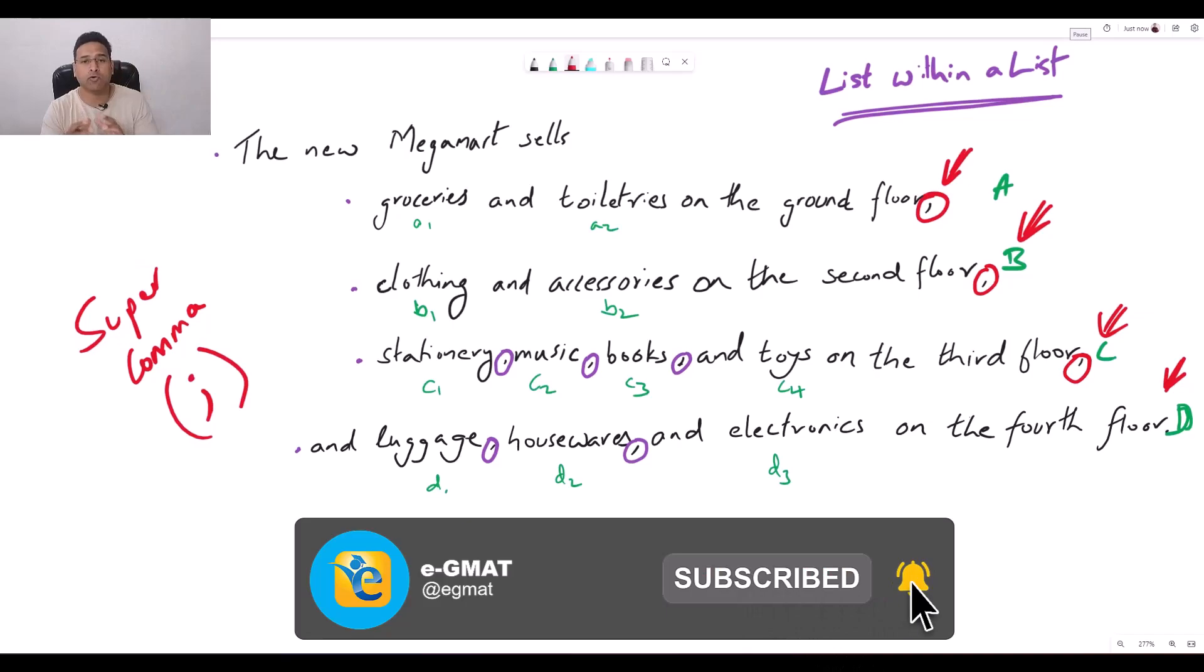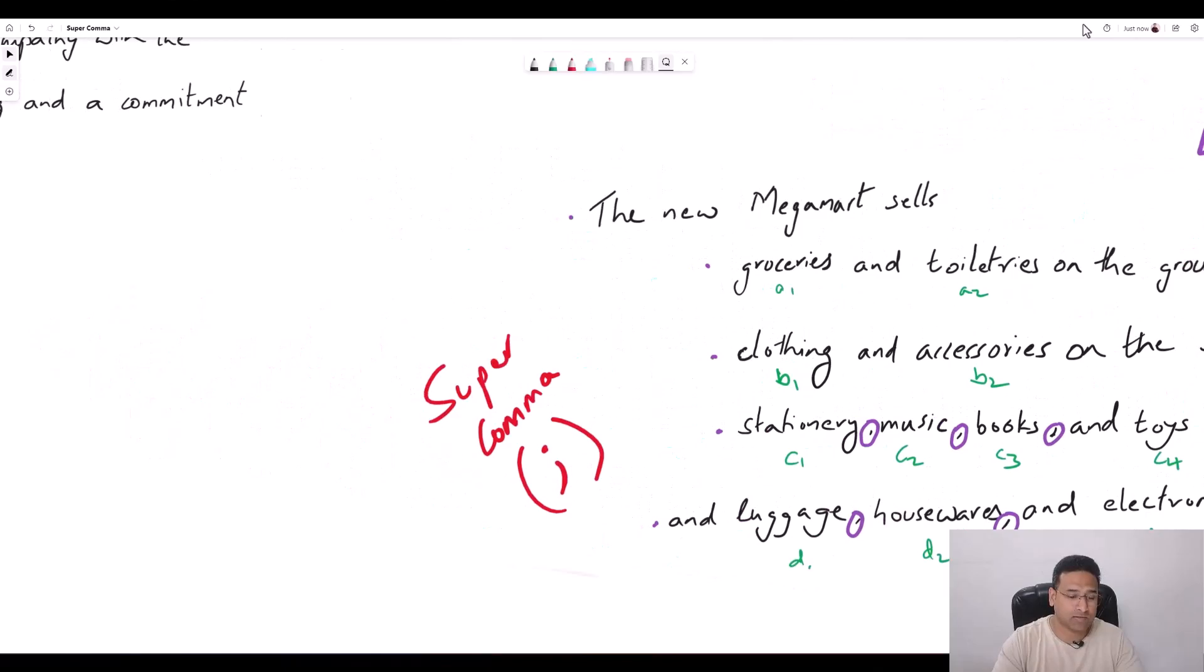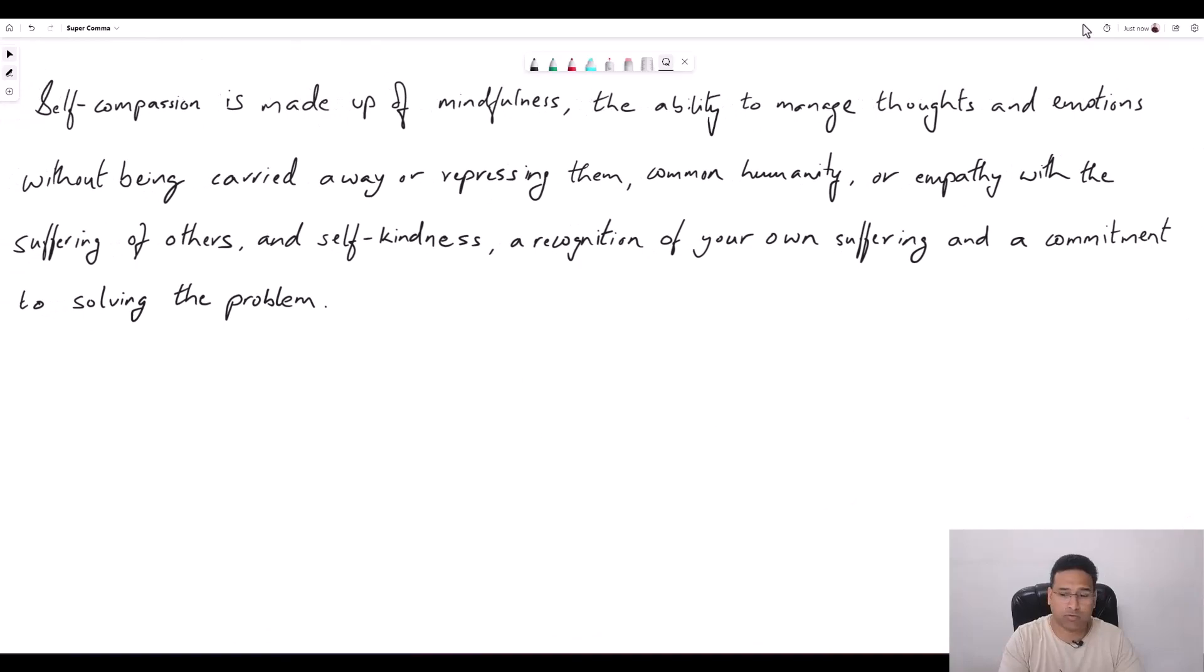A semicolon is like the elder brother of a comma. So where you need the big brother, you know, instead of using a comma, use a semicolon. If we escalate these to semicolons, then this sentence becomes even more legible and comprehensible than earlier. And that is why using commas in such sentences would be incorrect if you are to use them to separate the super entities. Now, let's apply this to our official question and see if we can figure out what's wrong with answer choice A.